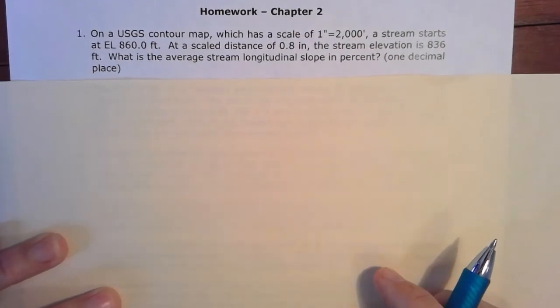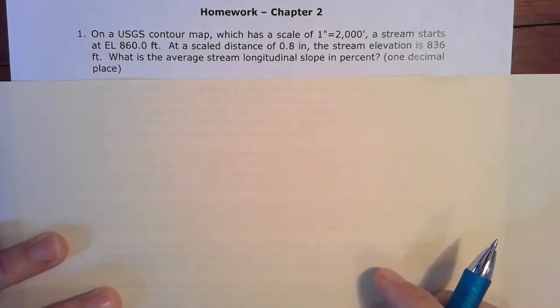On a USGS contour map, which has a scale of 1 inch equals 2,000 feet, a stream starts at elevation 860. At a scale distance of 0.8 inches, the stream elevation is 836 feet. What is the average stream longitudinal slope in percent to one decimal place?